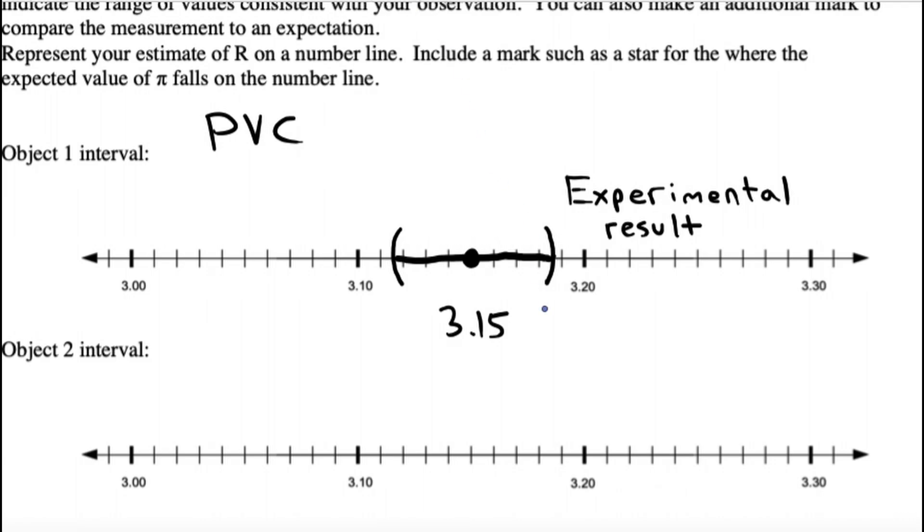But, there is also a theoretical answer that we're looking for. And, that's π. And, I'm just going to put it in as a star. π, of course, is the theoretical value from math. And, it would be at 3.14159, yeah, right here. So, put a little star there. And, what we hope is that the theoretical value is within your confidence interval. That would be a good result.